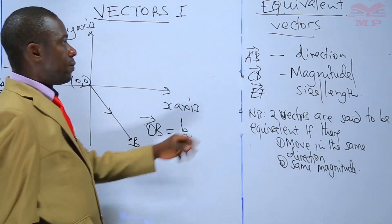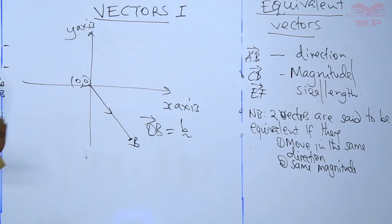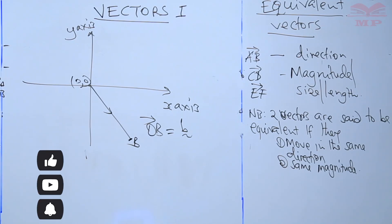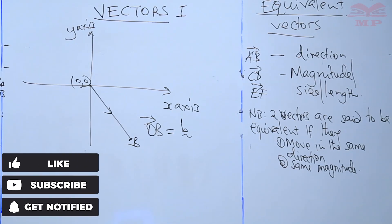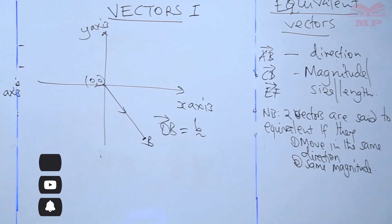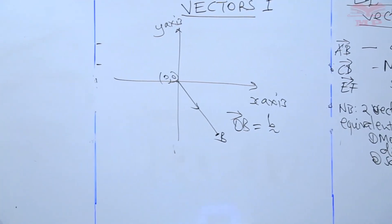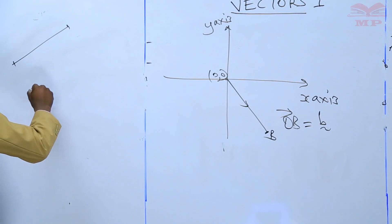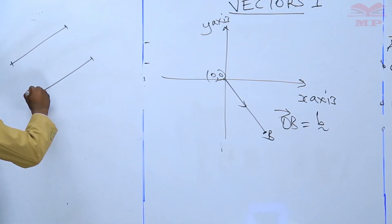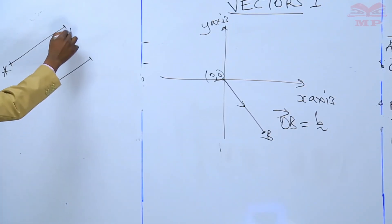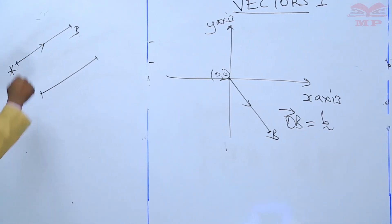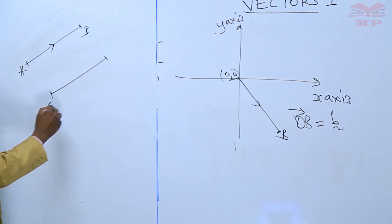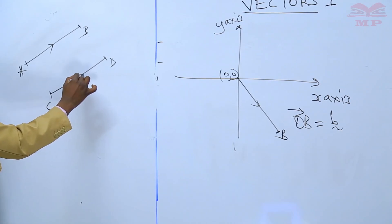We can illustrate this further by checking an example of two vectors. Suppose we have vector AB going in one direction and vector CD going in another direction.